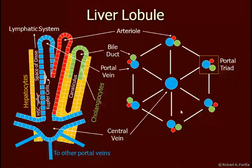This is a lobule — a little schematic here. It's a hexagonal shape. This is the portal triad, which consists of the hepatic portal vein, bile duct, and arterioles. At the center of this lobule is the central vein, and this vein leads back to the heart.